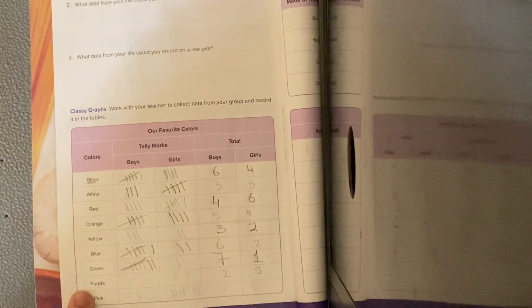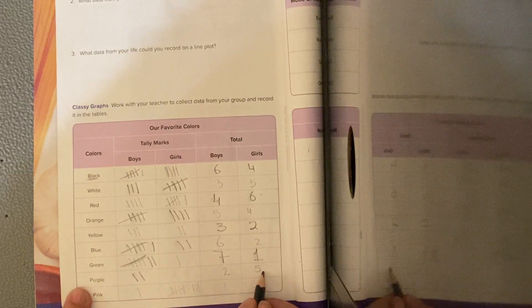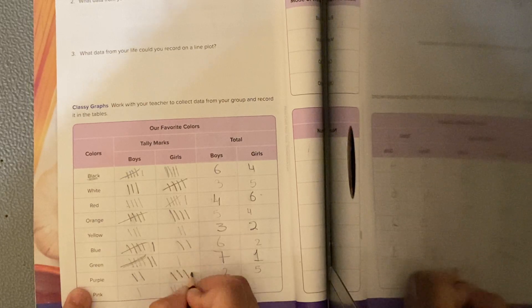The purple here. How many boys like purple? 2, 1, 2. How many girls like purple? 1, 2, 3, 4, 5.